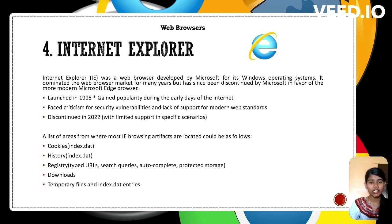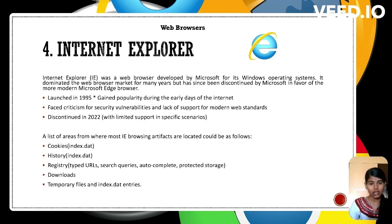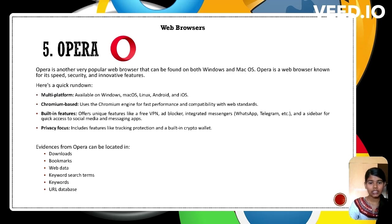Internet Explorer was a Microsoft web browser launched in 1995, once dominant but criticized for security issues and outdated standards, discontinued in 2020. Its artifacts were found in cookies, history, registry, downloads, and temporary files. Opera is a fast, secure web browser with unique features like a free VPN, ad blocker, and integrated messenger. It's multi-platform, Chromium-based, and privacy-focused, with evidence from user activity including downloads, bookmarks, web data, and more.